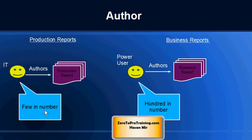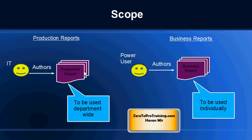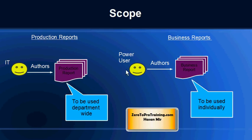If a company produces production reports in-house, the authors are few in number — just a few programmers creating reports. In the case of business reports, there could be hundreds of authors because each person can create their own reports. This also affects scope: a report produced by programmers is intended for department-wide, company-wide, or project-wide use, while a business report can be created by an individual just for their own purpose. Cost also differs — a programmer may take days to produce a report, while a power user can produce a business report in minutes.